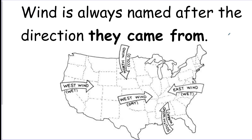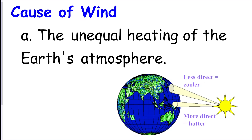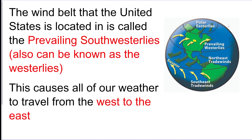Wind always goes from high to low pressure, and it's named from where it came from. The cause of wind is that the earth is unequally heated, creating different temperatures and pressures. We are in the prevailing southwesterlies wind belt in the United States, so all weather moves from west to east.